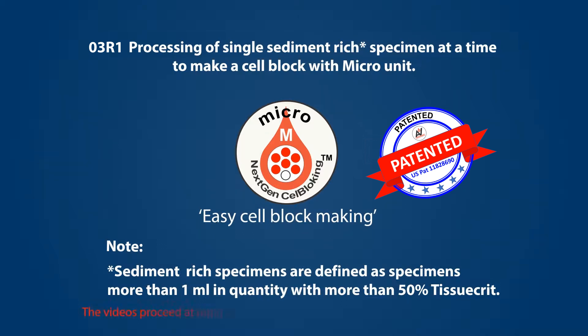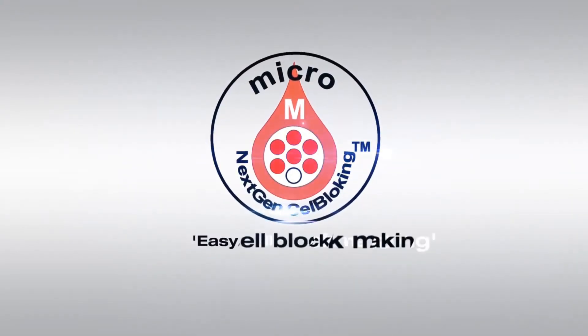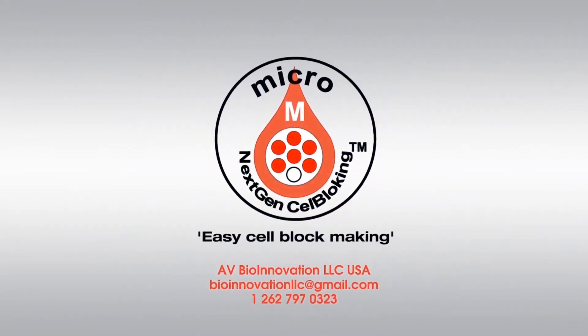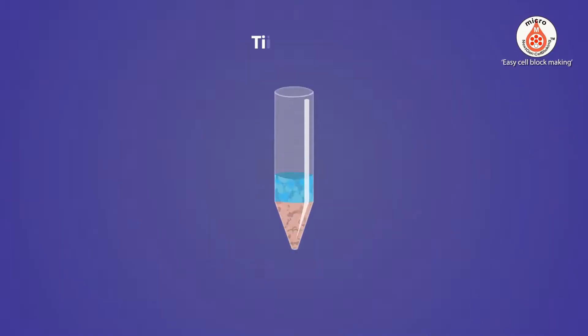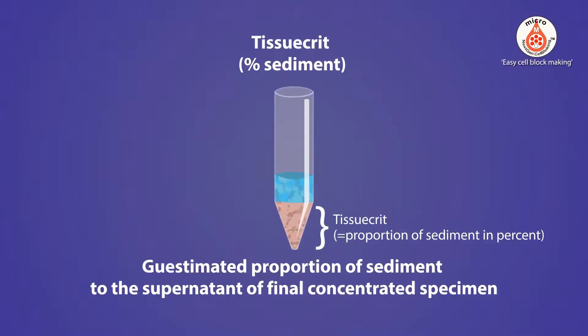The videos proceed at a rapid pace for quick viewing. Please pause and play as needed. Tissue crit is the proportion of sediments with diagnostic cellular material without blood in the final concentrated specimen.